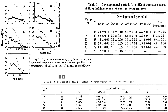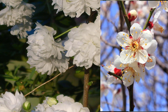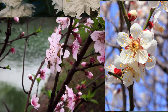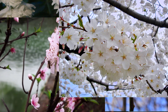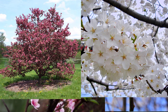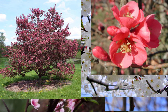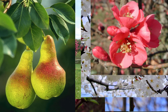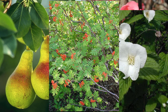Being heteroecious, it has winter and summer hosts. Winter hosts include many Prunus species, like bush cherry, Chinese plum, peach, and king cherry, but also apples, flowering quince, pear, jet bead, and rowan.